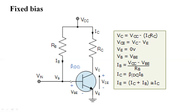Now for the base-to-emitter voltage, it is simply VB minus V. Since the emitter V is equal to 0, VB equals 0.7 volts — that is the forward bias voltage we need to turn the transistor on so that the transition should be done.